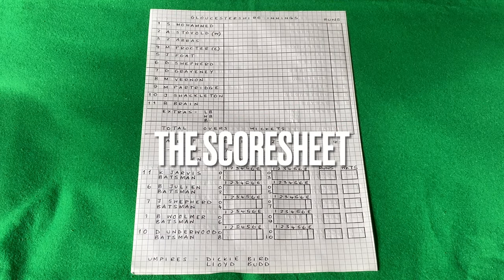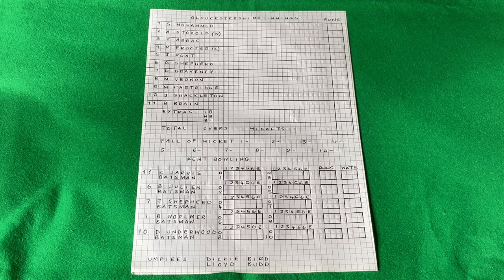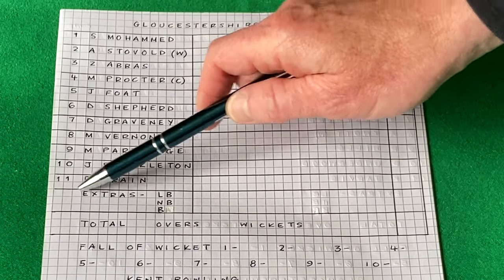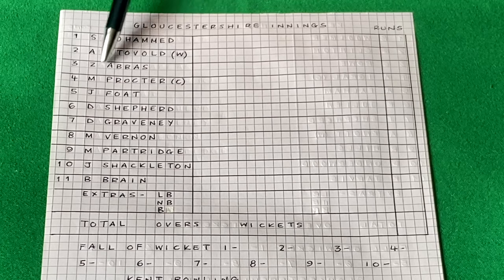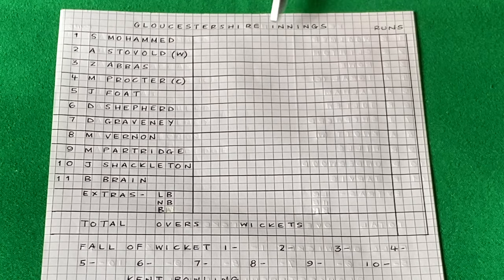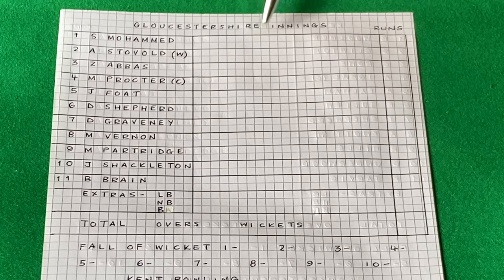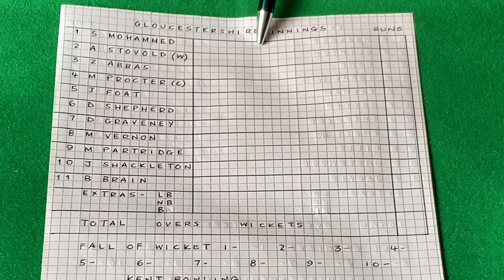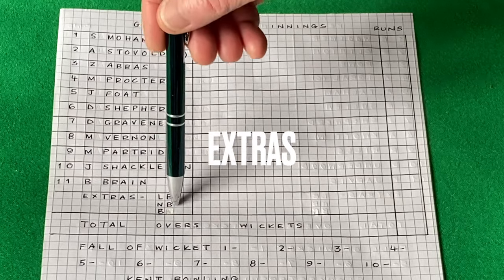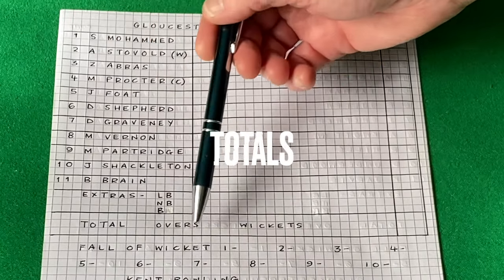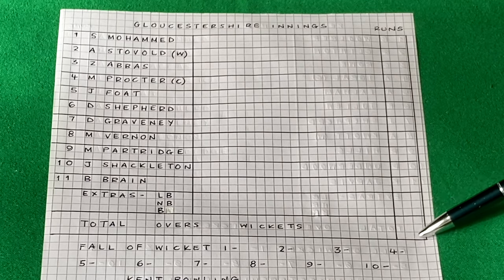I put this score sheet together to assist in producing the information sheets you see within the videos. We start off with the order of the batsmen within the team and against that we have the batsmen's names — Sadiq Mohammed, Andy Stovold, etc. for Gloucestershire. The first box is where the runs are placed as they're scored, along with the method of dismissal. We've then got an extras section which has leg byes, no balls, byes, and wides. The totals section covers overs, wickets, and total runs.